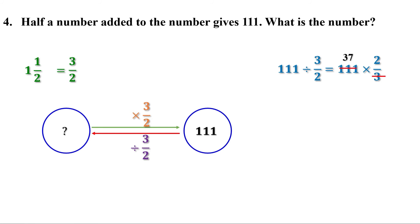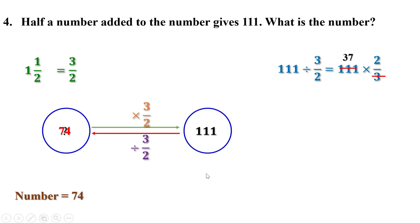3 goes into 111 thirty-seven times, and 37 times 2 is 74. The number is 74. Let us check: half the number is 37, and 74 plus 37 is 111. So the answer is right.